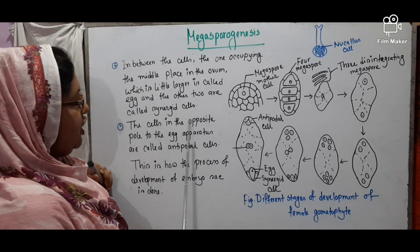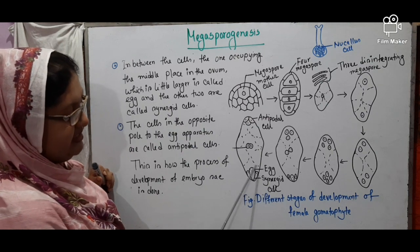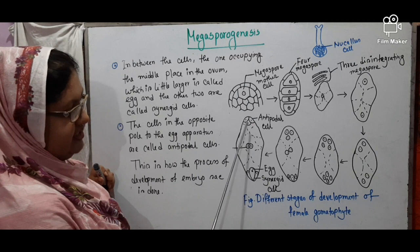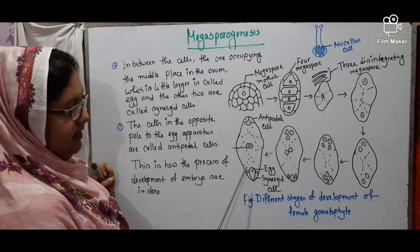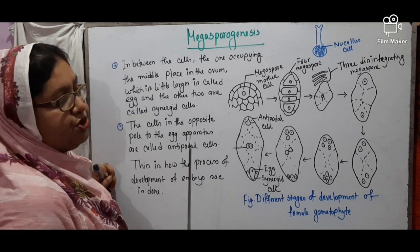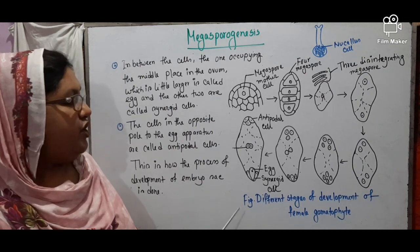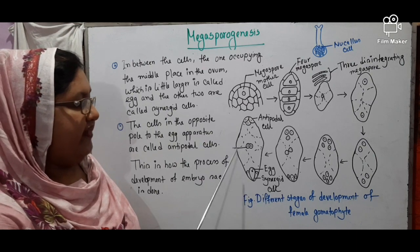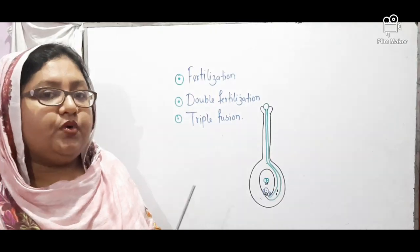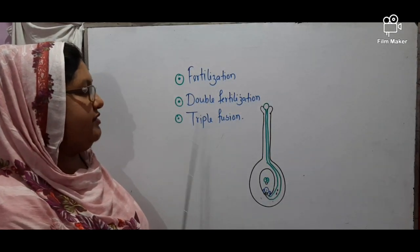The cells at the opposite pole to the egg apparatus are called antipodal cells. This is how the process of development of the embryo sac occurs, and thus the female gametophytes are produced. Now my last topics are Fertilization, Double Fertilization, and Triple Fusion.